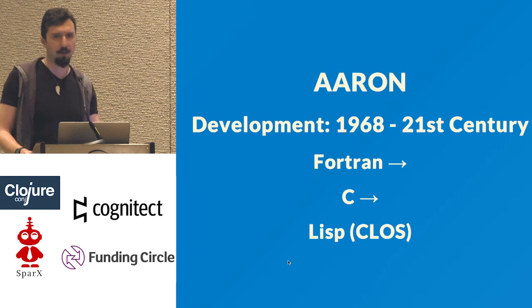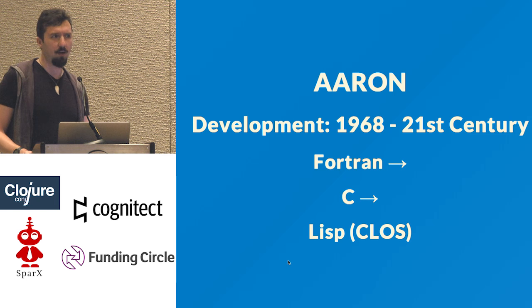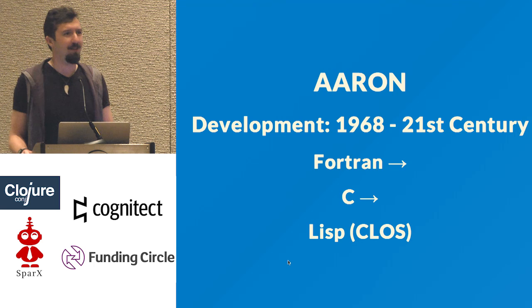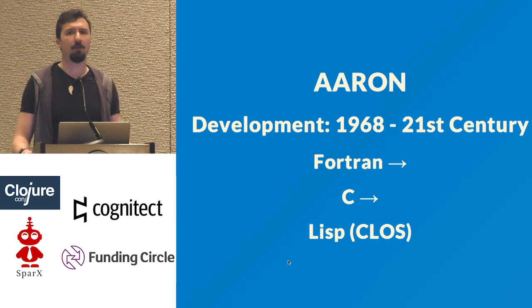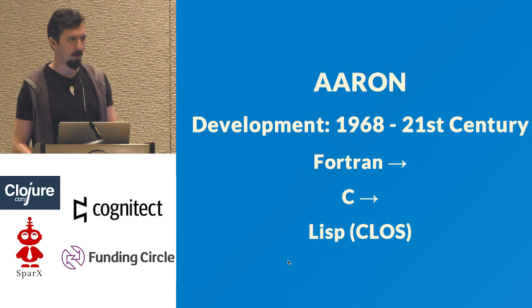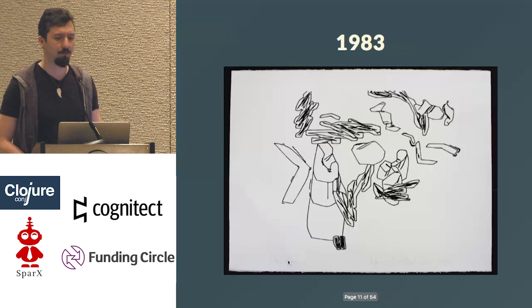In the domain of qualitative reasoning, I'm going to start by talking about Aaron. A lot of you have probably heard of Aaron — it's a painting robot. The development window started in 1968, a pretty big development window. It continued well into the 21st century. It started in Fortran, went on to C, and ultimately ended up in Lisp — Common Lisp Object System, or CLOS.